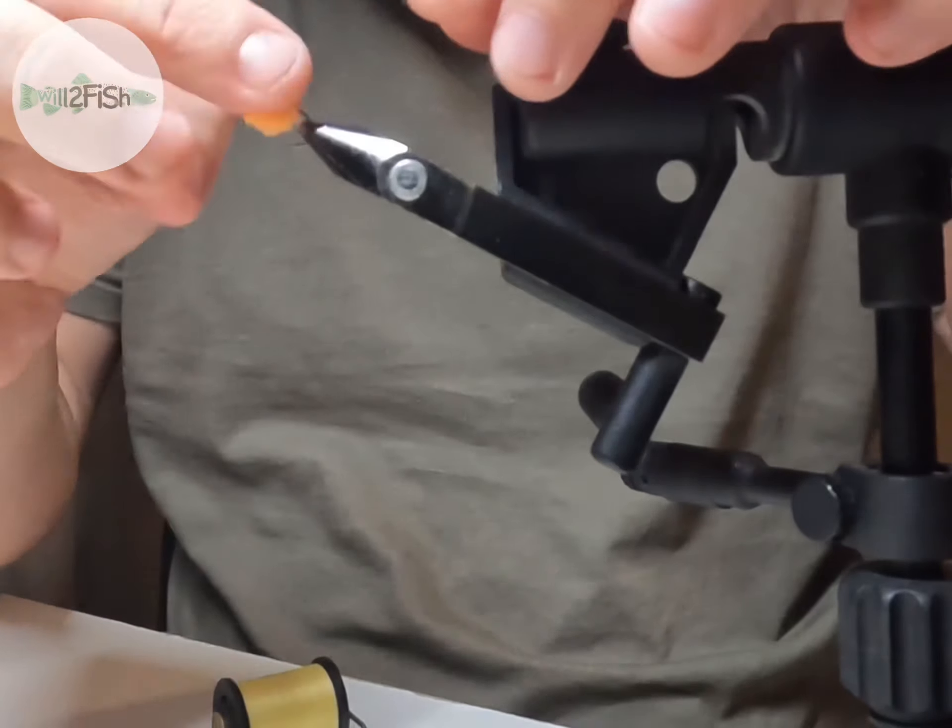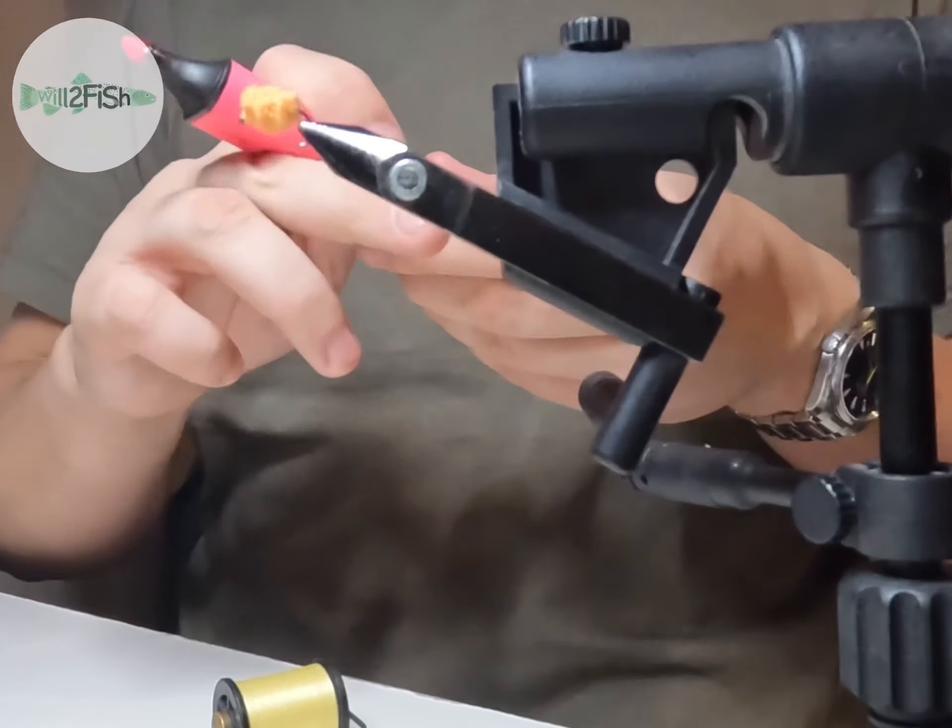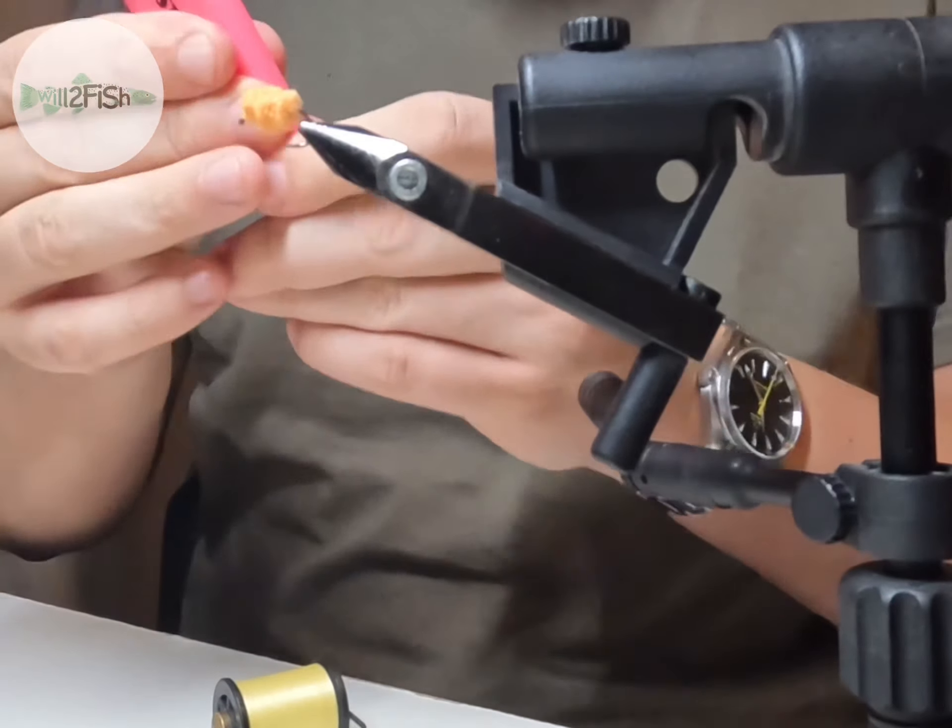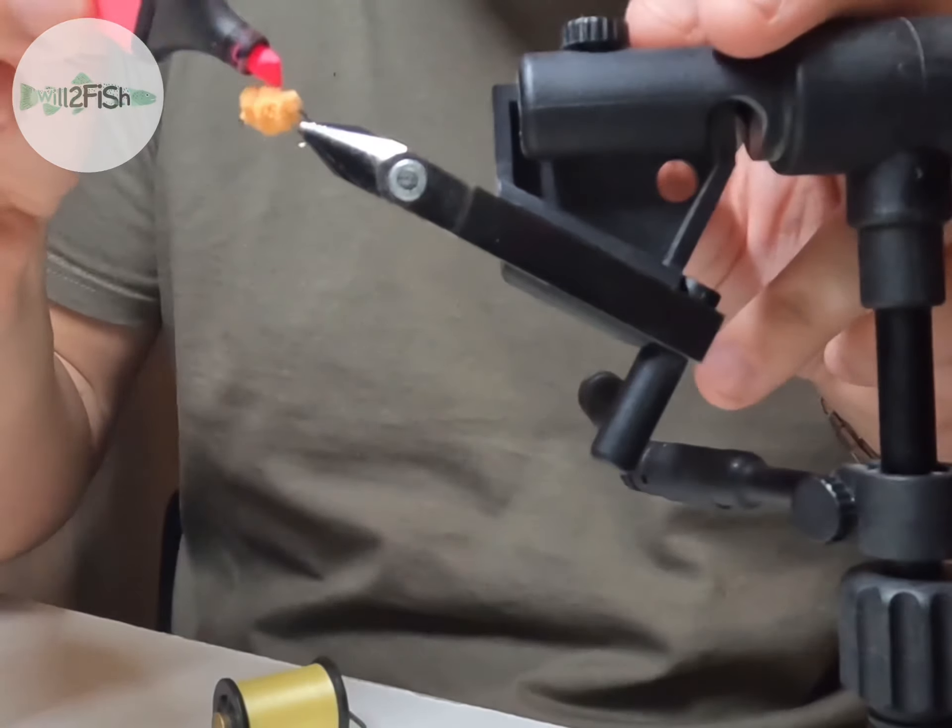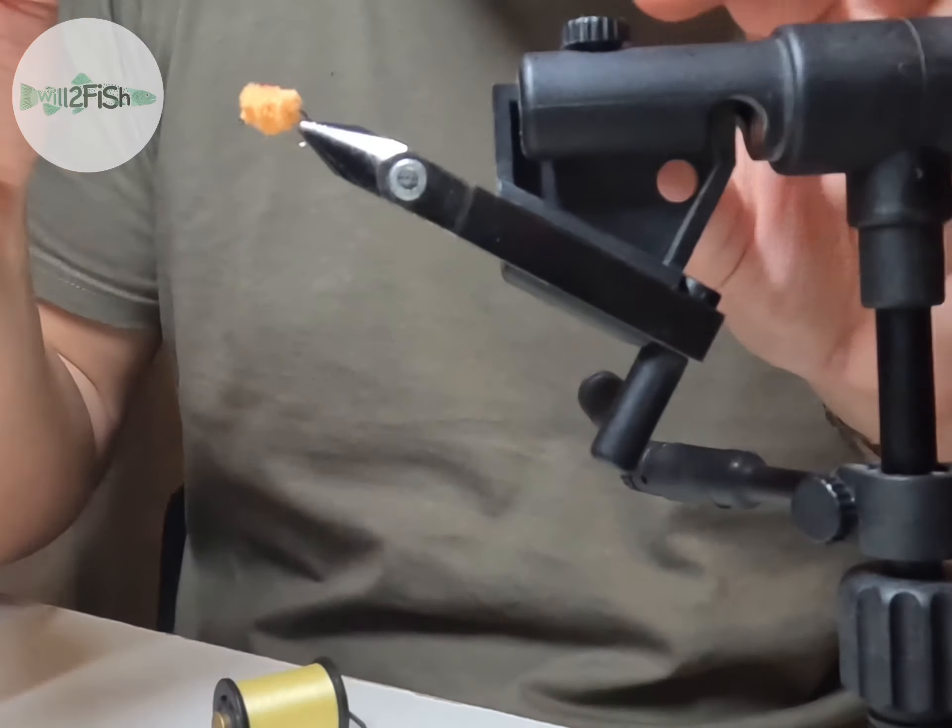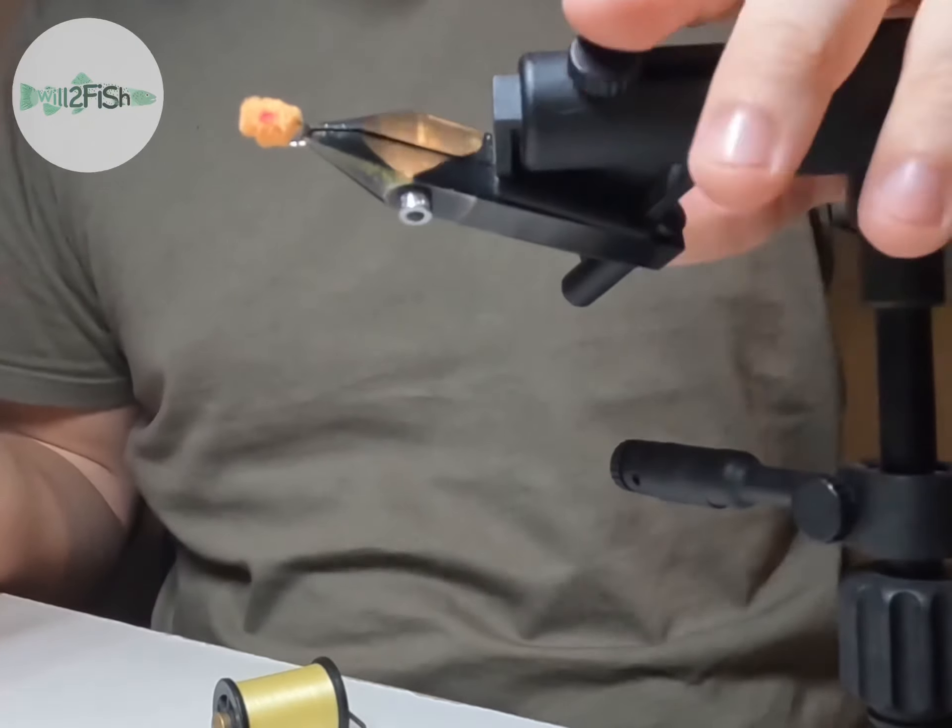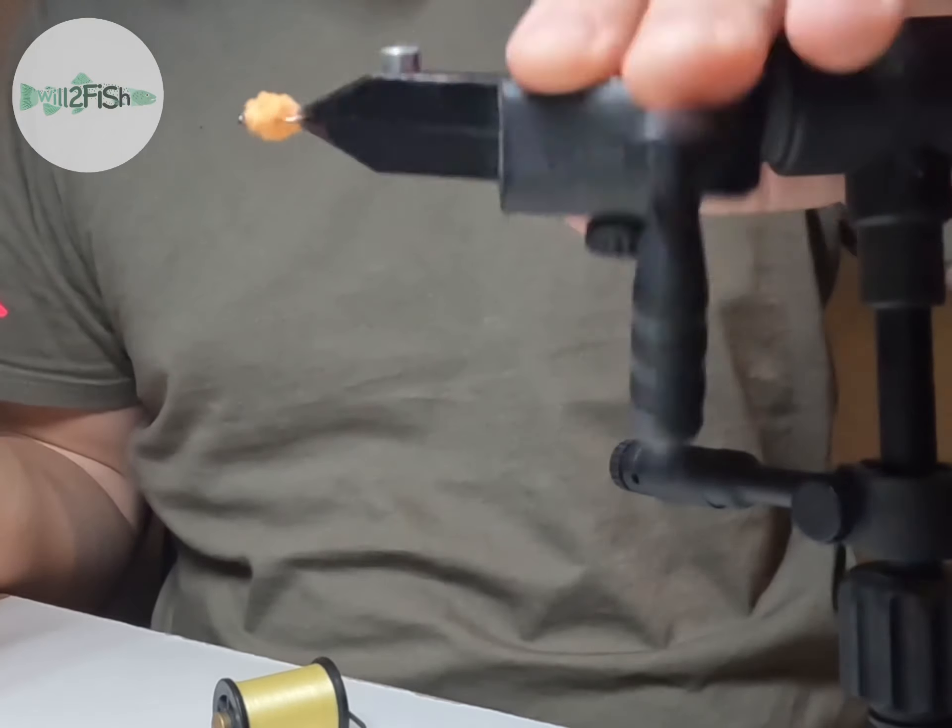What you can also do is get a highlighter or a marker pen and just give a dot on one side of the fly. I've seen this used in other patterns, but I'm not sure what it adds, but I think it looks nice, I guess.